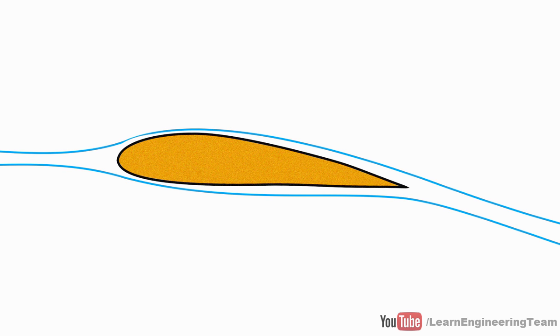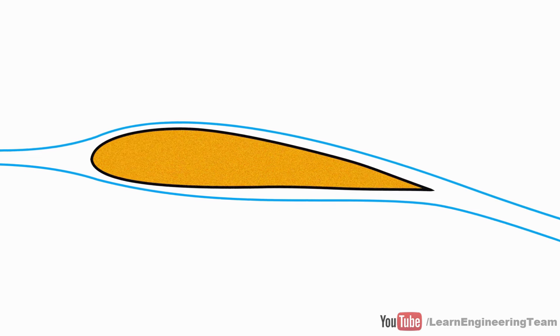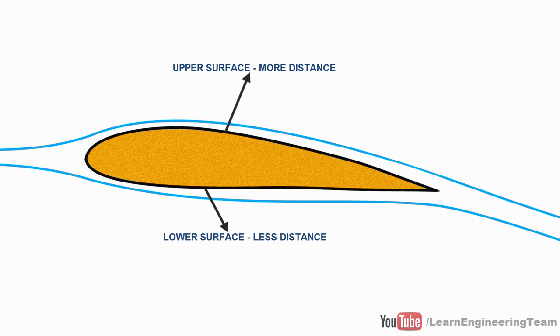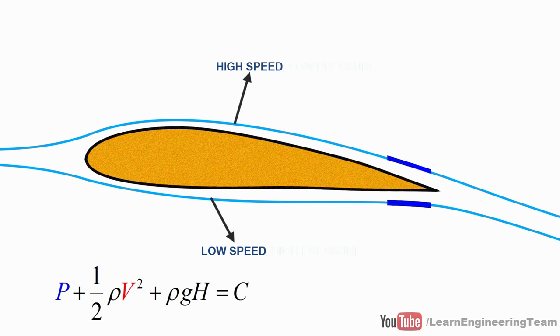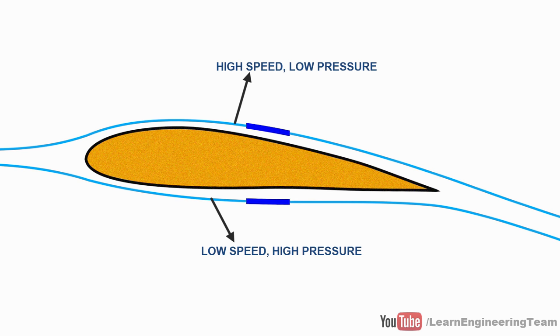First, let's see what is the argument that uses Bernoulli's principle. The particles on the upper surface should travel a greater distance than the particles on the lower surface. Since both particles should reach the trailing edge at the same time, the upper surface particles should have more velocity than the lower surface particles. This means that according to Bernoulli's principle, there is more pressure at the bottom and less pressure at the top surface. The difference in pressure generates lift.